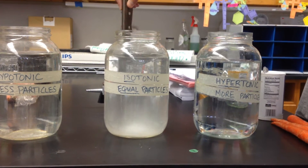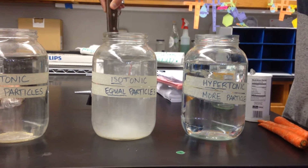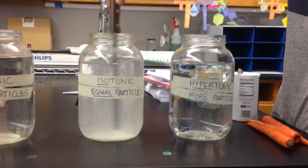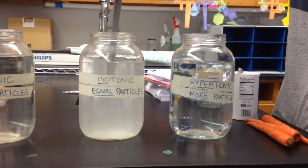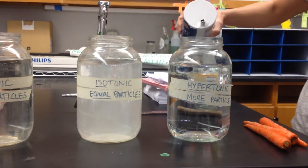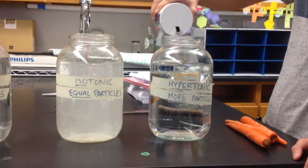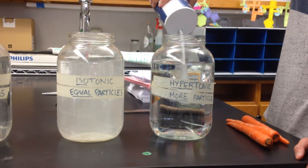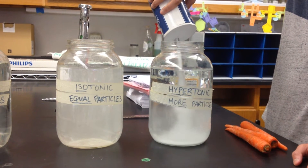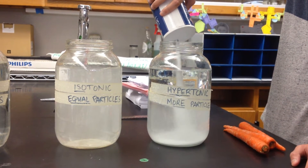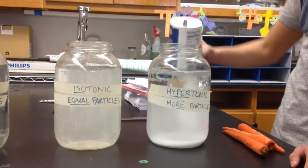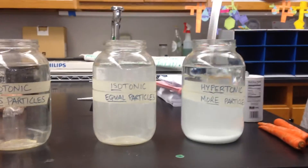Our last container says hypertonic — hyper, the prefix, means high or more. That's going to have a whole ton of salt in it. We're going to add whatever we just put in the isotonic container plus a whole bunch more. Let's go ahead and keep going. This is going to be pretty salty. All right, let's go ahead and mix that up pretty good.